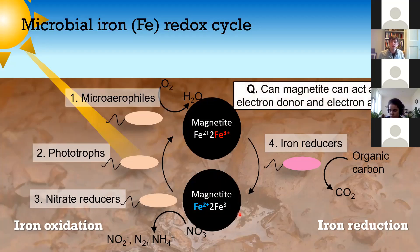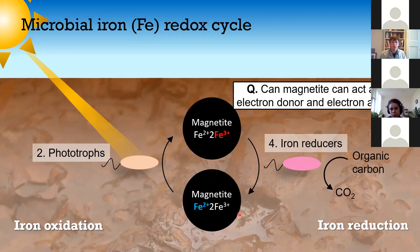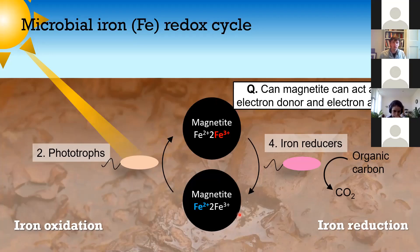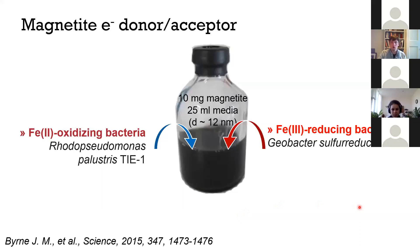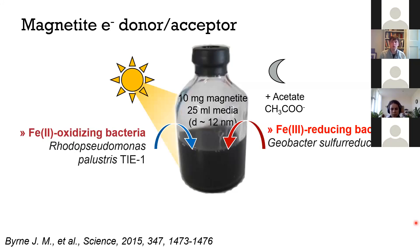In this study I used isolated phototrophs and iron reducers in the same system — a co-culture — so no microaerophiles or nitrate reducers, though I did do a small study with nitrate reducers and saw similar effects. I had cultures containing the magnetite itself, plus iron-oxidizing bacteria (Rhodopseudomonas palustris Ti1) and iron-reducing bacteria (Geobacter sulfurreducens). The advantage of using the phototroph is that we can use light to control iron oxidation, and when we remove the light and add acetate as an electron donor for the reducers, we stimulate iron reduction — so you can cycle between the two mechanisms in the same co-culture.